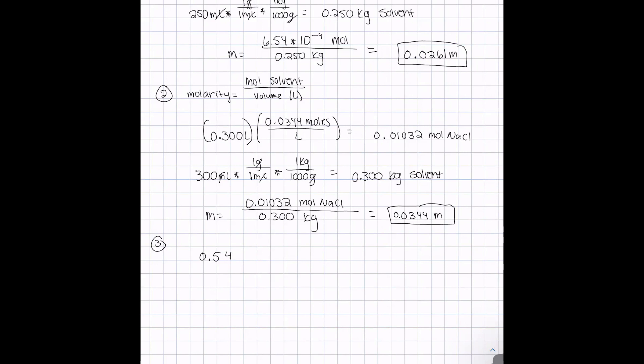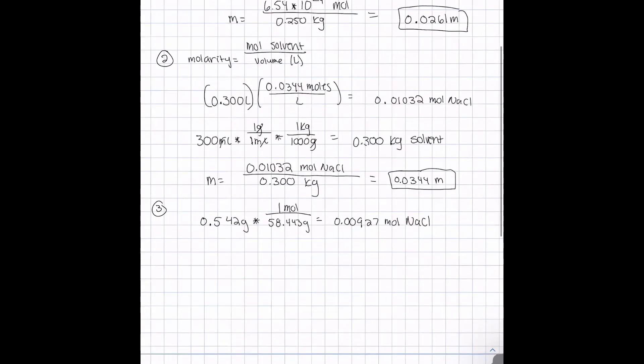We multiply the mass by 1 over the molar mass, which we said before was 58.443 grams, to get that there are 0.00927 moles of NaCl.